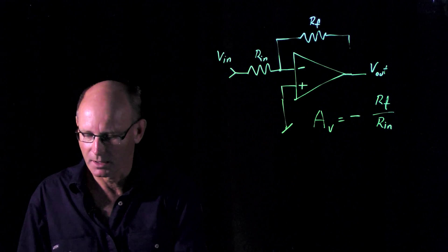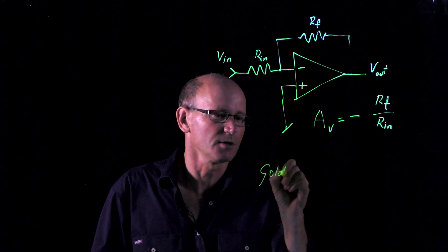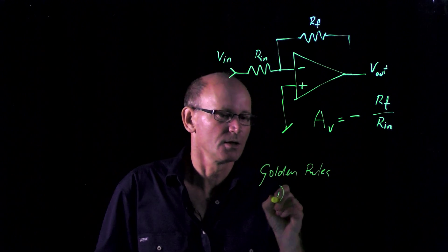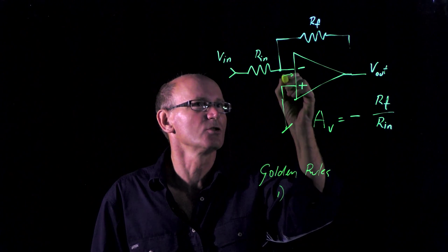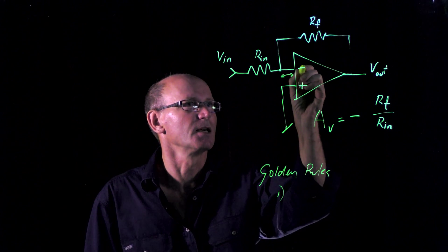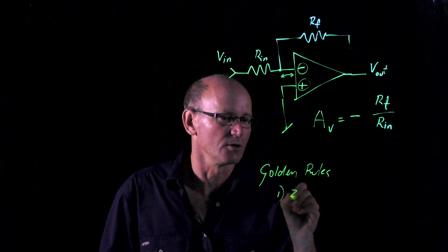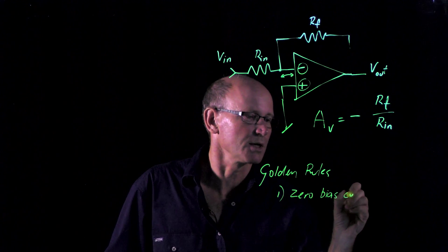Now remember our two golden rules for op amp circuit design. Number one, we assume we have no current flowing into or out of either the non-inverting input or the inverting input. So zero bias current.